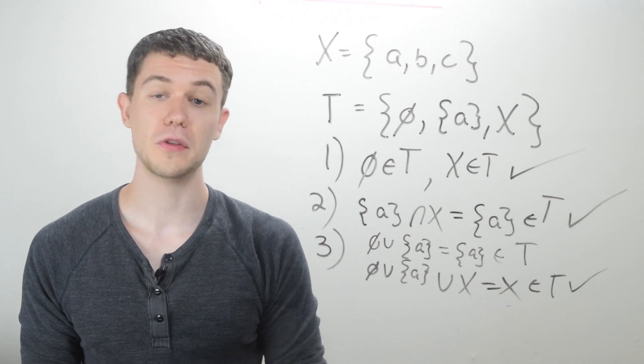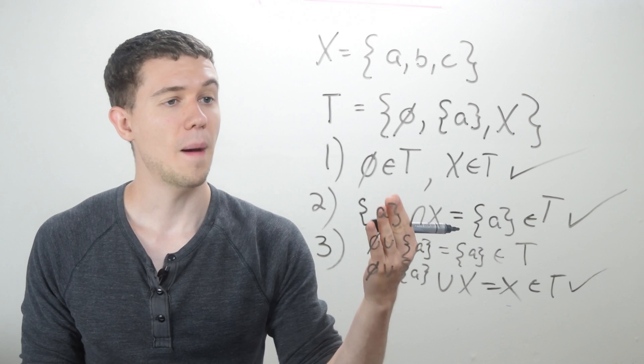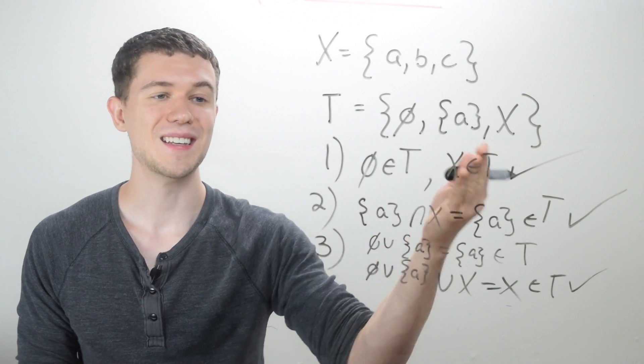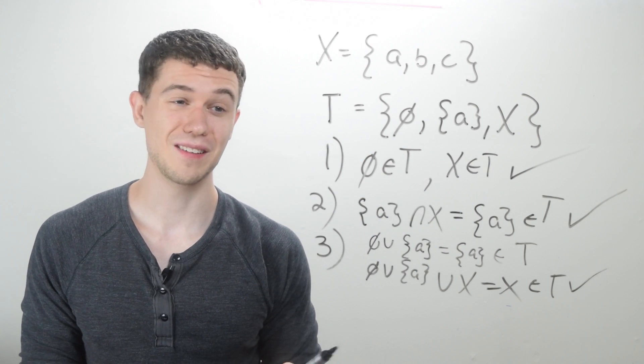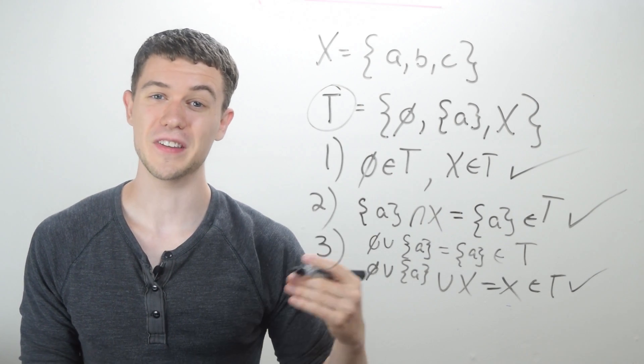And so those are the three criterion. And maybe this seems a little weird why we're doing this, but we can see this satisfies the three criterion for a topology. So this T is a topology on the set X.